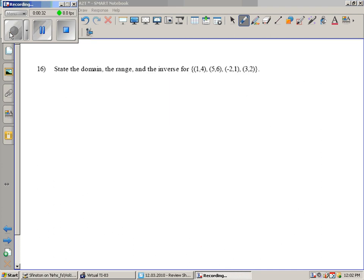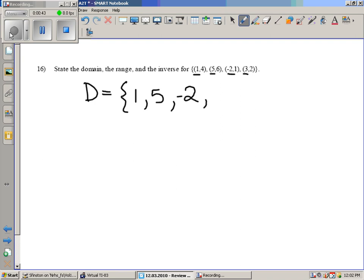State the domain, range, and the inverse. Well the domain are just all the x values. The domain for this function would be 1, 5, negative 2, and 3. And you could just write it down like that. I tend to put the funny brackets like this: 1, 5, negative 2, and 3. By funny brackets I mean solution set brackets.